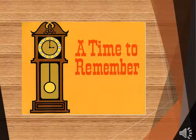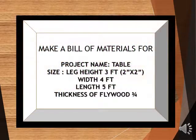A time to remember. Can you make a bill of materials for this project? Project name: Table. Height: 3 feet, Width: 4 feet, Length: 5 feet, and the thickness of the plywood is 3/4.